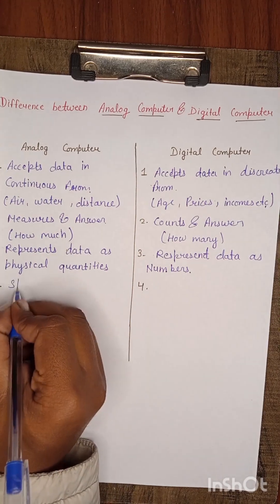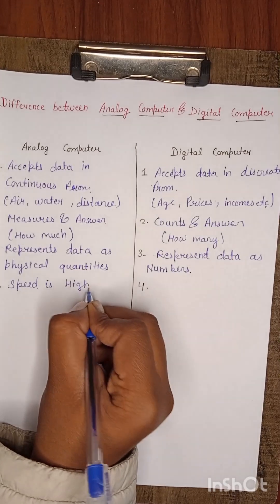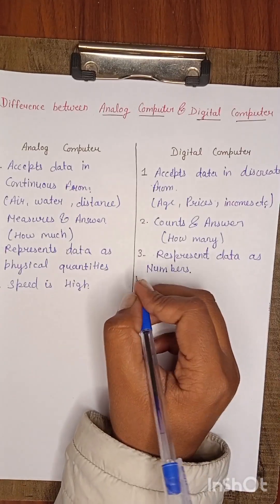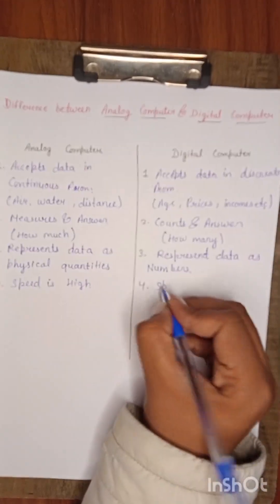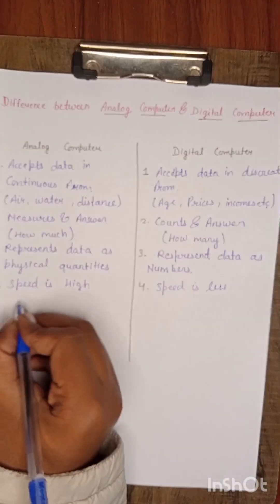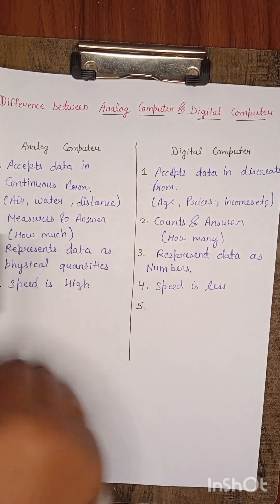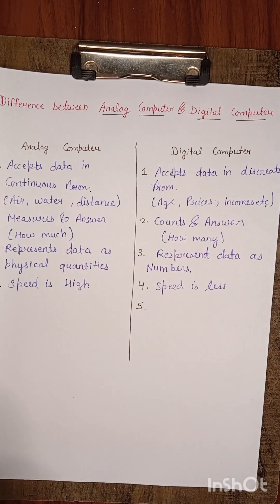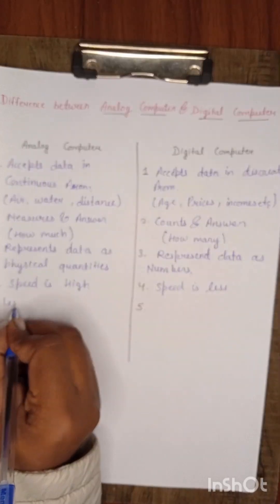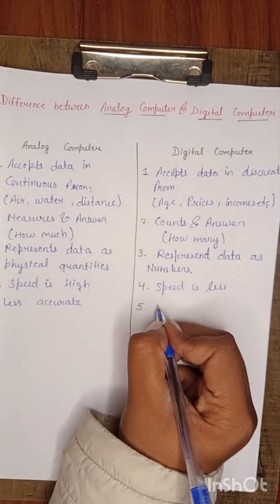Speed is high. Speed is less. Fifth point: less accurate. High accurate.